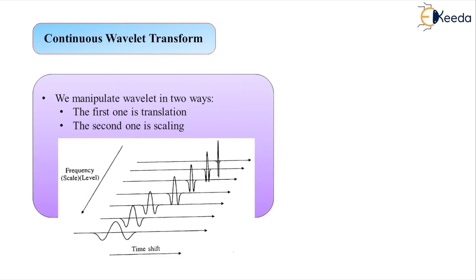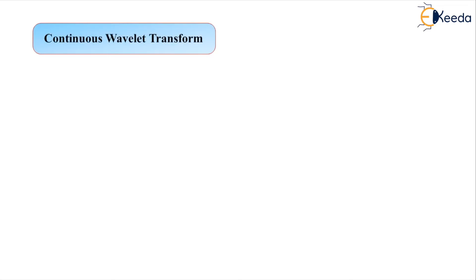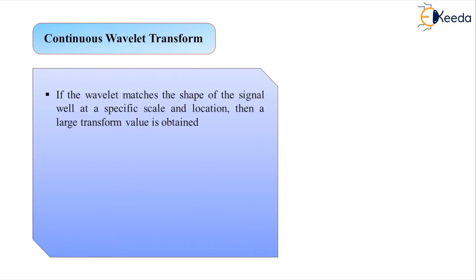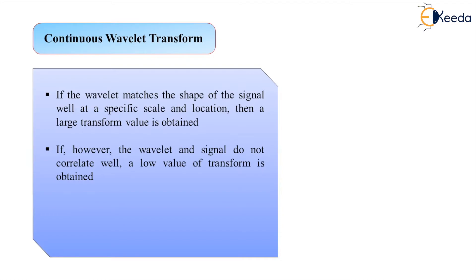Now let us have a first-level introduction to Wavelet transformation. What exactly does the term Wavelet mean? In the title Continuous Wavelet Transform, we find three terms: continuous, Wavelet, and transformation. The middle term — Wavelet — means a very small wave. Wavelet analysis is about analysing the signal with short-duration, finite-energy functions. Unlike Fourier transformation, we have a variety of Wavelets used for signal analysis, and the choice of a particular Wavelet depends on the type of application at hand.